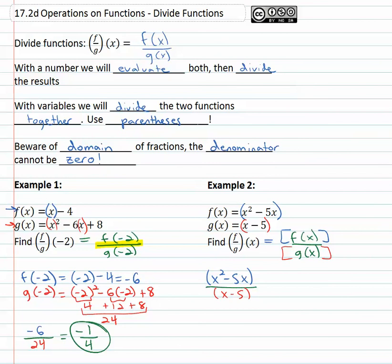Remember, when reducing fractions, we cannot reduce if there's any adding or subtracting without factoring first. Do not cross off the fives and the x's—that's bad.